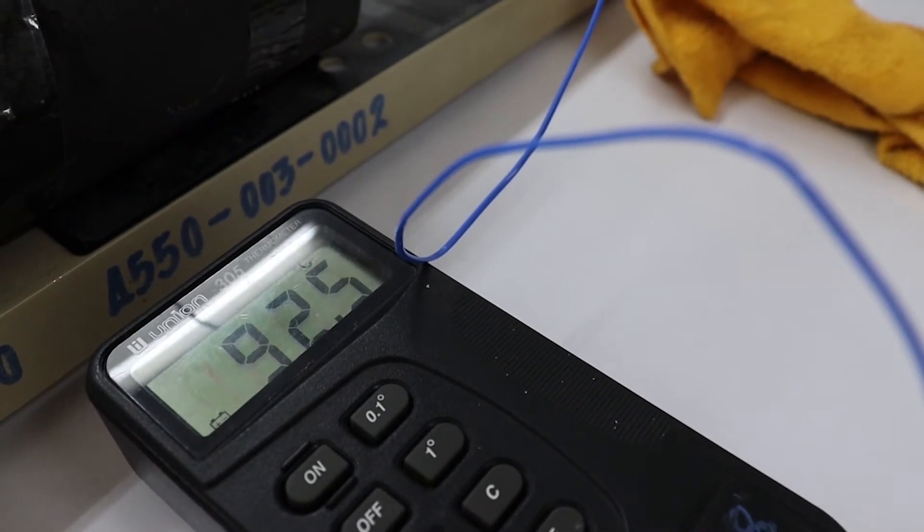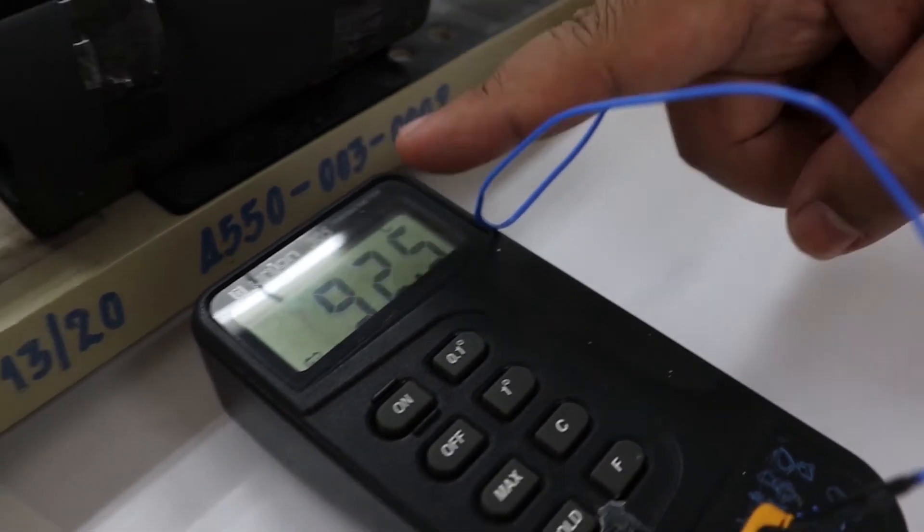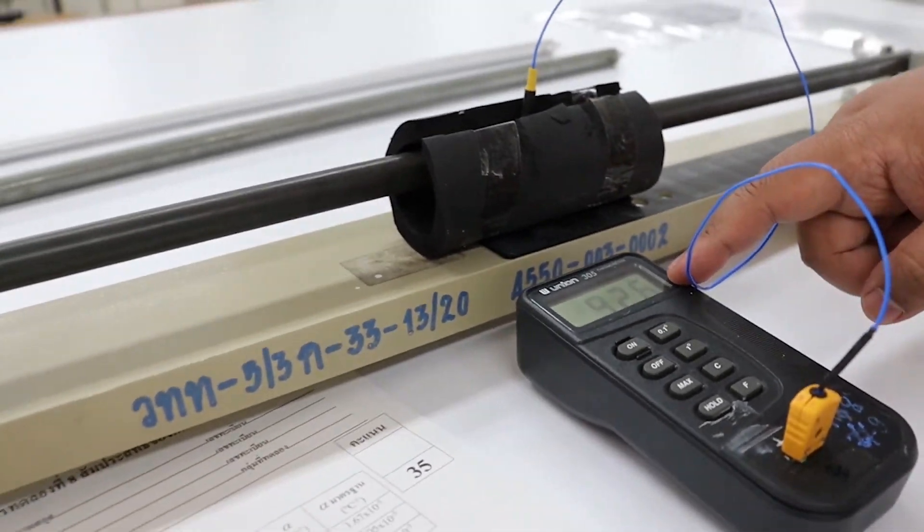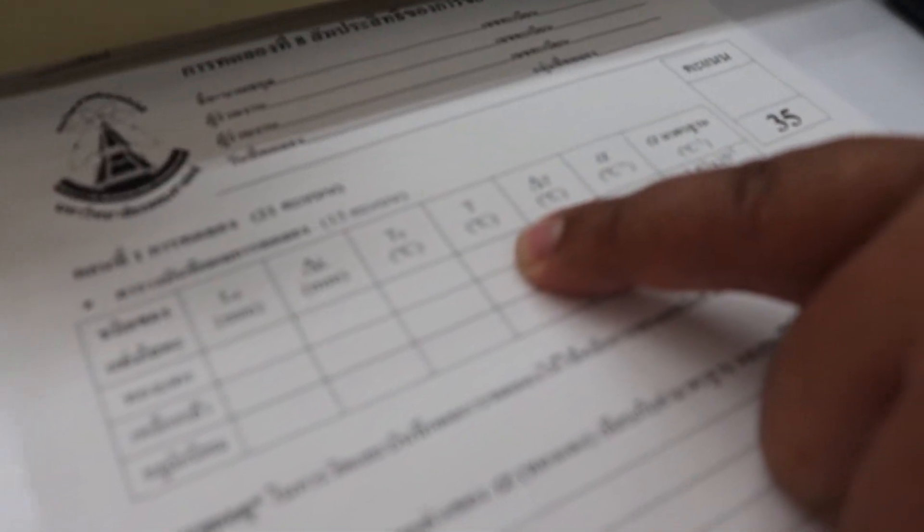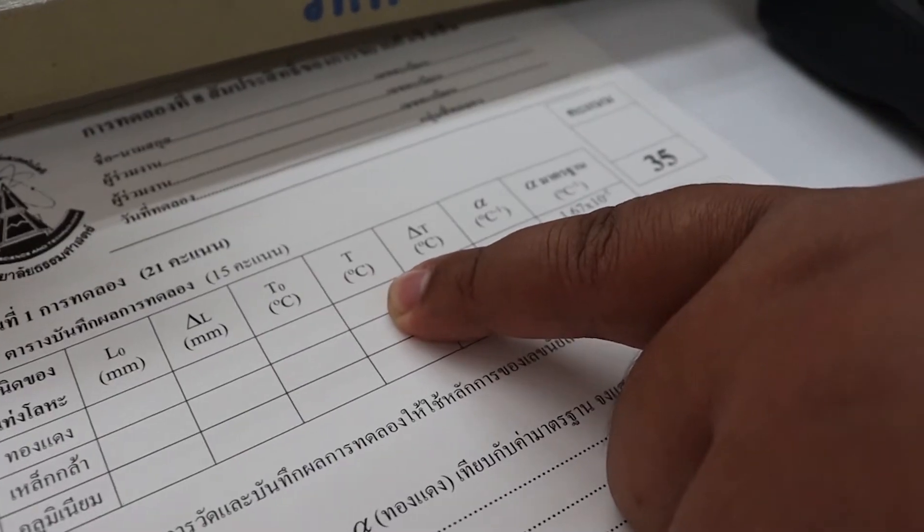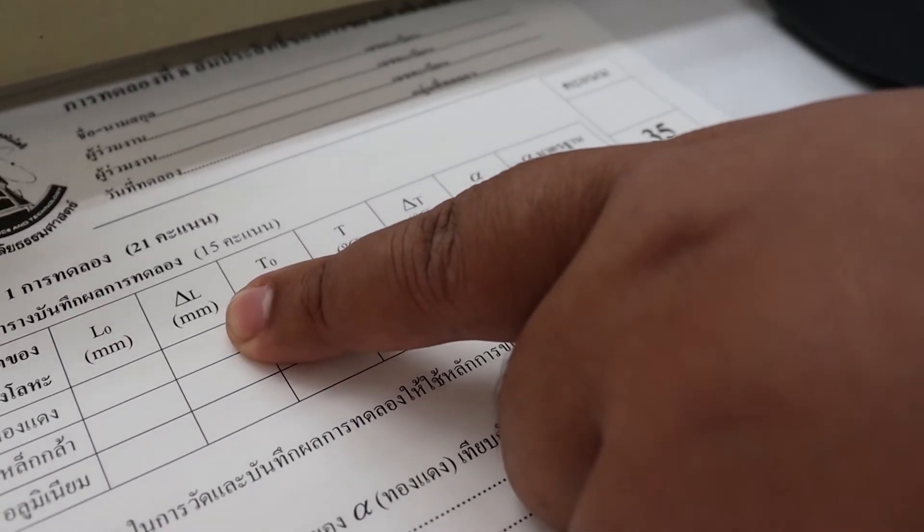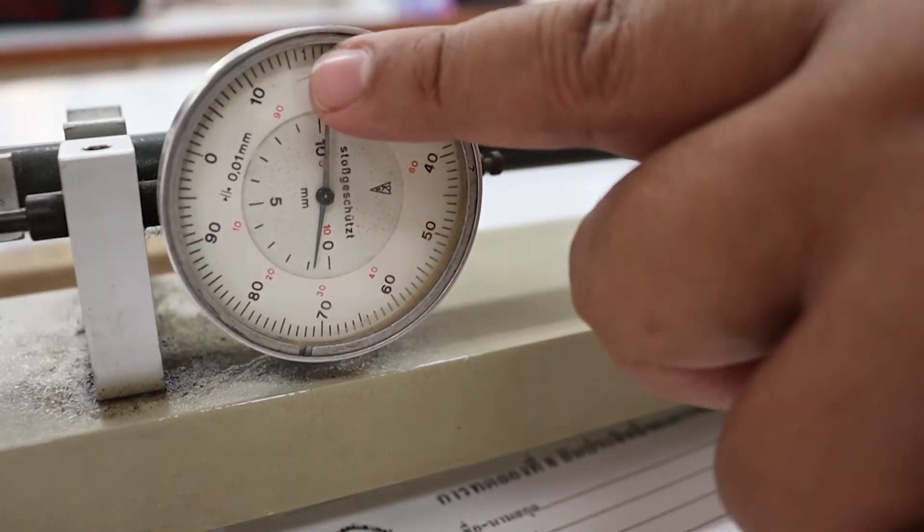Assume that the temperature is constant now at 92.6. This temperature is T final. Write it down here. Then, to measure delta L, look at the dial gauge. Record the initial and final positions.